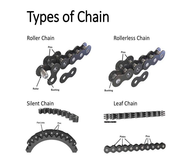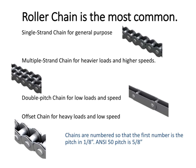There are four basic types of chains: the roller chain, which is the most common; the rollerless chain, which is basically the same except it doesn't have that roller; the silent chain; and the leaf chain.